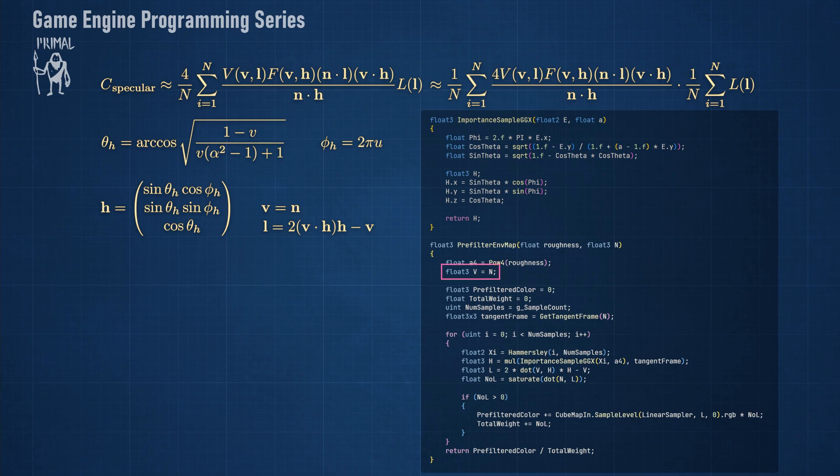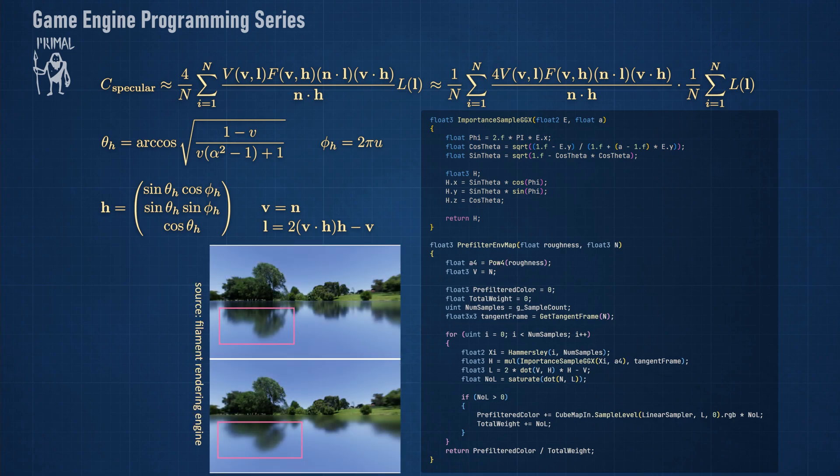The pre-filtering method is similar to the one we wrote for diffuse pre-filtering. As I mentioned, the view vector is the same as the normal direction. And because of this, we'll get a larger error at grazing angles as we can see here.